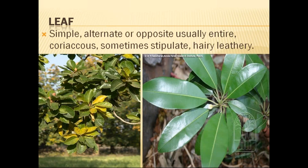The leaves are generally simple, alternate or opposite, usually entire, coriaceous, sometimes with hairy stipules. Generally the leaves are simple, alternate or opposite, with entire margin. The coriaceous smooth leaves in Sapotaceae are even more coriaceous than those seen in Myrsinaceae.